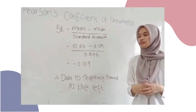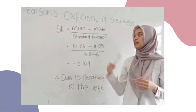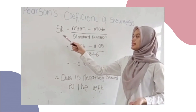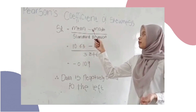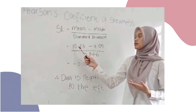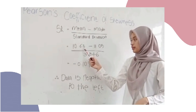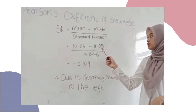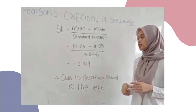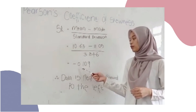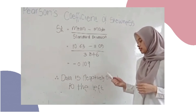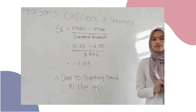We will also find Pearson's coefficient of skewness using the formula SK equals (mean minus mode) over standard deviation. So SK equals (10.63 minus 11.05) over 3.846, giving negative 0.109. This means the data is negatively skewed to the left. Thank you.